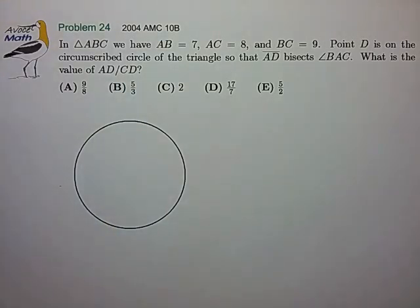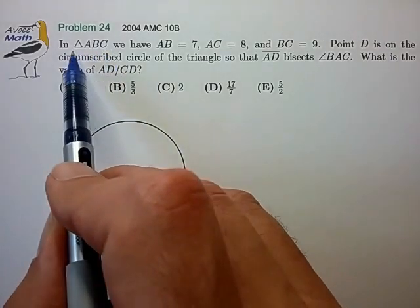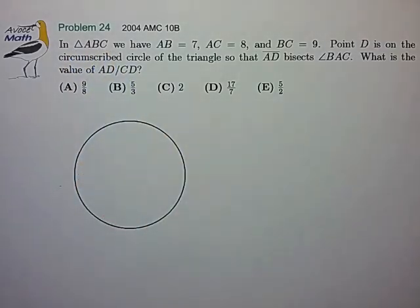Okay, so this is another question where a careful drawing will probably help us, so let's try to do that. Now, when trying to draw triangles with circumscribed circles, I generally try to start with a good circle and draw my triangle inside of it, instead of the other way around. And that usually works out pretty well for me. So, let's go ahead and try to do that.